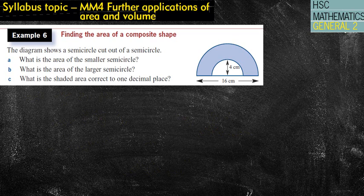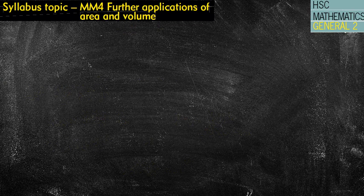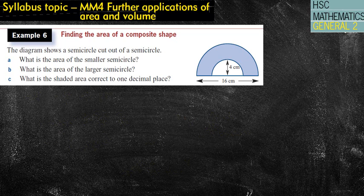Alrighty. Next question. I think this is going to be close to being the last question. So, the diagram shows a semicircle cut out of a semicircle. Alrighty. So, it's kind of like an annulus, but it's like a half of an annulus, right? So, part A says, what is the area of the smallest semicircle?